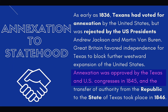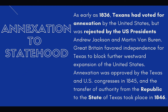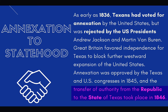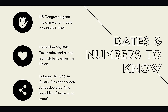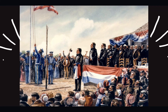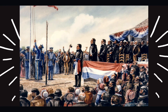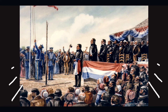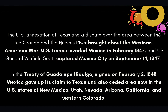Annexation was approved by the Texas and US Congresses in 1845 — just shy of ten full years of Texas independence. The US Congress signed the annexation treaty on March 1st, 1845, and on December 29th, 1845, Texas was admitted as the 28th state to enter the Union. By February 19th, 1846, in Austin, President Anson Jones — president of the Republic of Texas — declared 'The Republic of Texas is no more.' There's even a painting marking this moment, showing Jones lowering the Texas flag and raising the United States flag.